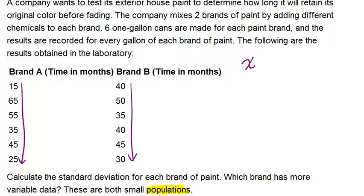We also need to know mu, which is the mean or average for Brand A and Brand B. Finally, we need to know n, which is the number of data points. There are six for Brand A and six for Brand B, so n will be six for each brand.